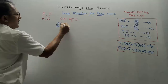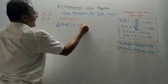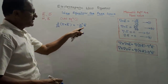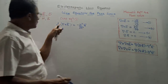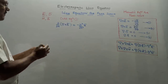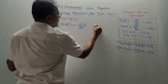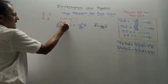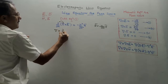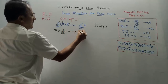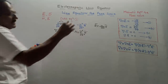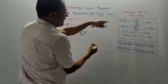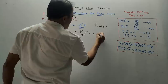Differentiating equation 1 with respect to time gives: ∂/∂t(del × Ē) = −∂²B̄/∂t². The minus sign is already there and taking the derivative makes it ∂²B̄/∂t². Substituting B̄ = μ₀H̄ and interchanging del and ∂/∂t, this becomes: del × (∂Ē/∂t) = −μ₀ ∂²H̄/∂t². This is equation number 6.